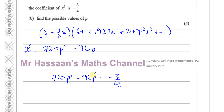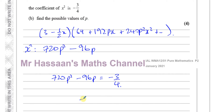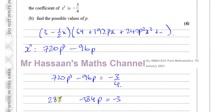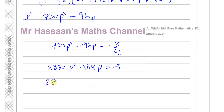So we can say that 720P² − 96P = −¾. We need to solve this equation to find the possible values of P. Multiplying both sides by 4 to clear the fraction: 4 × 720 = 2880, and 4 × 96 = 384, giving us 2880P² − 384P + 3 = 0.